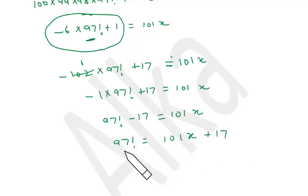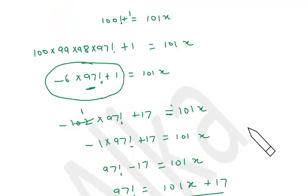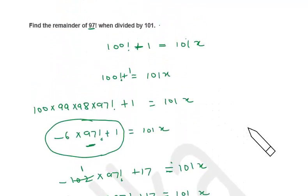97 factorial can be written as 101x plus 17. So if you divide 97 factorial by 101, that means you are dividing 101x plus 17 by 101. You can do individual division. Here the remainder will be 0, here the remainder will be 17. So when 97 factorial is divided by 101, the remainder will be nothing but 17. So this is how the problem can be done. Initially you will take some time to understand, but gradually you will find it very easy to solve.